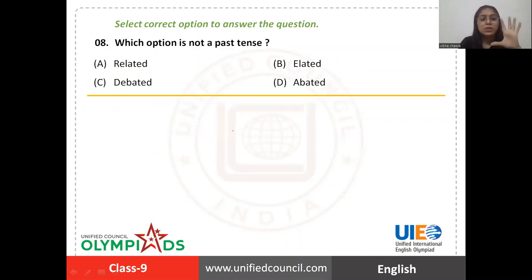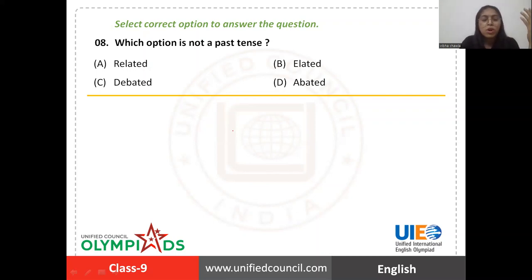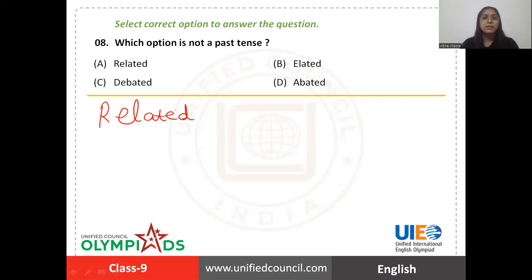Next question: which option is not a past tense? The options are 'related', 'elated', 'debated', or 'abated'. You have to pick the word that is not a verb, because if it's not a verb it can never have a past tense — only verbs have past or past participle forms. 'Relate' is a verb, so 'related' can be the past form of 'relate'. 'Related' can also be an adjective, but 'relate' is definitely a verb.